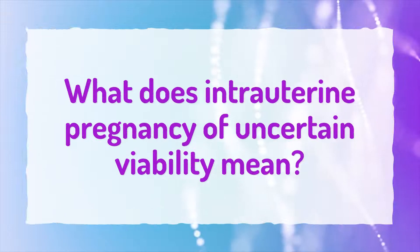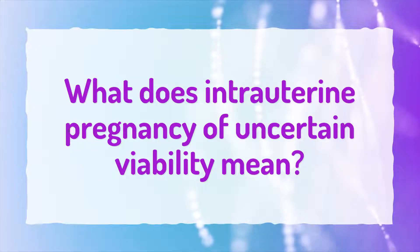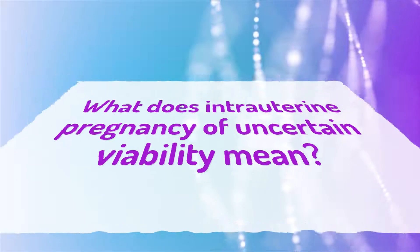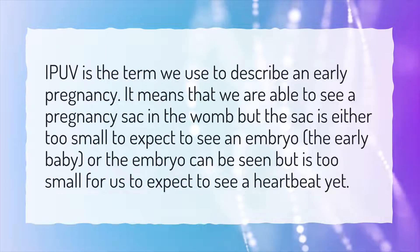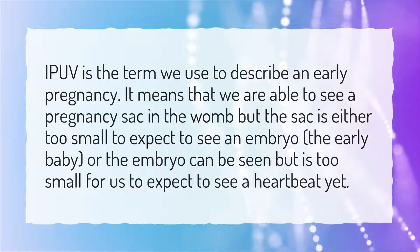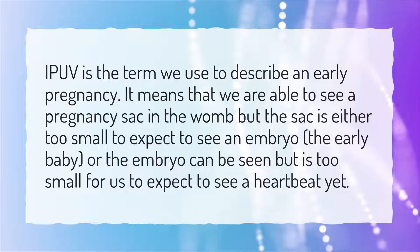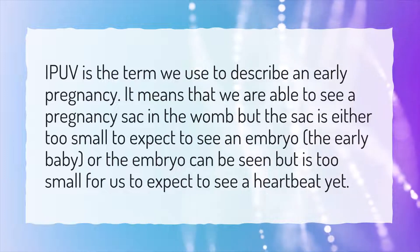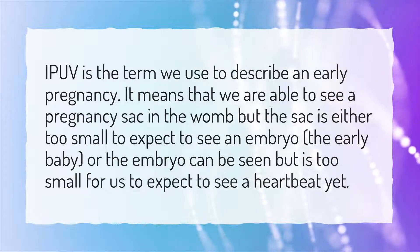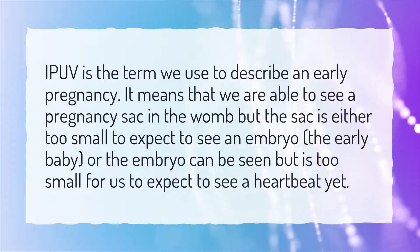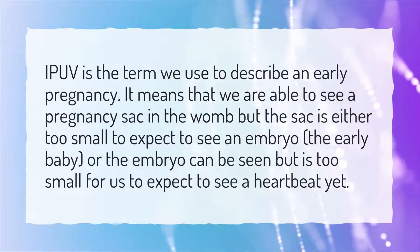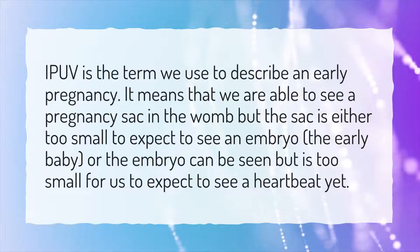What does intrauterine pregnancy of uncertain viability mean? IPUV is the term used to describe an early pregnancy where a pregnancy sac can be seen in the womb, but the sac is either too small to expect to see an embryo, or the embryo can be seen but is too small to expect to see a heartbeat yet.